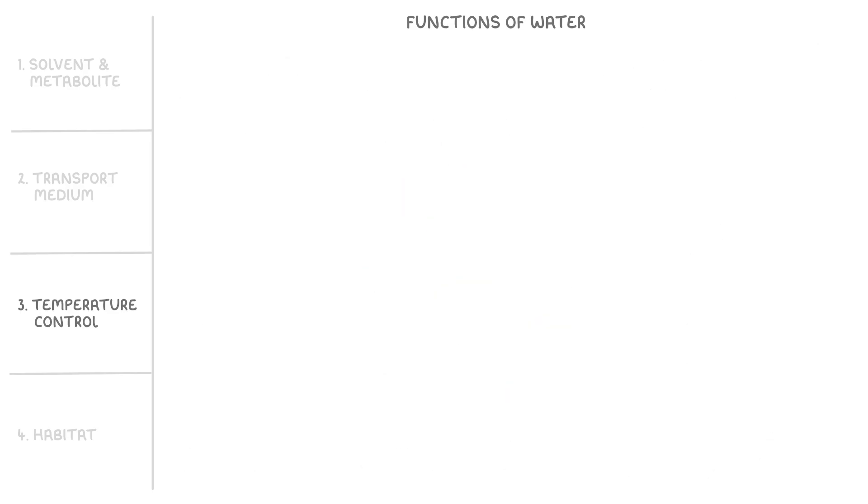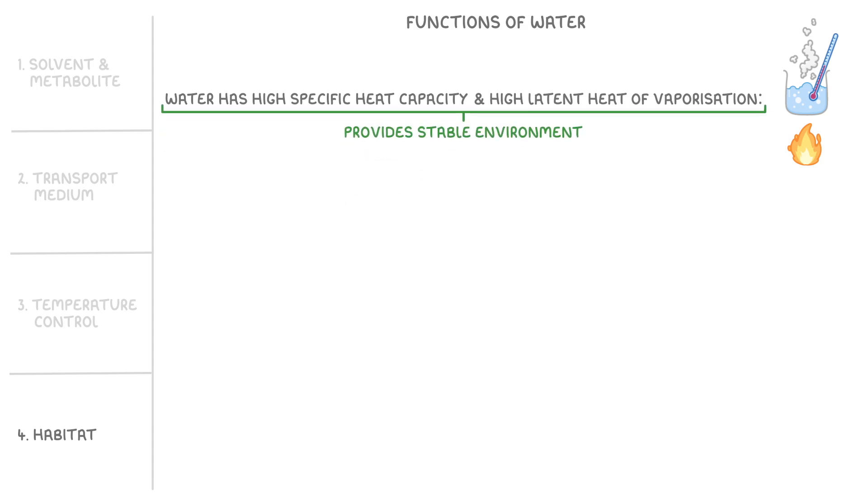Now to finish up, let's talk about water's role as a habitat. As water has a high specific heat capacity and a high latent heat of vaporization, it provides a stable environment for many organisms, because it remains at a fairly constant temperature and doesn't change state easily.